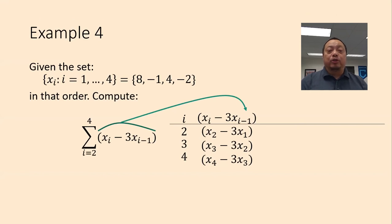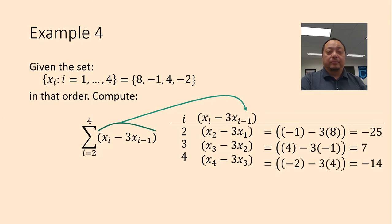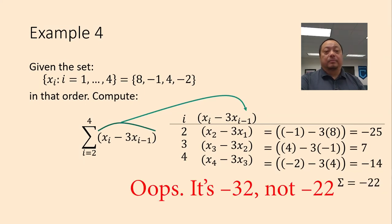Now we need to put in the numerical values. For the first line, the x sub 2 is negative 1, so put that in. Minus 3 times x sub 1, and x sub 1 is 8, so plug that in like that, that's our first line. And add, total is negative 22, that's our answer.